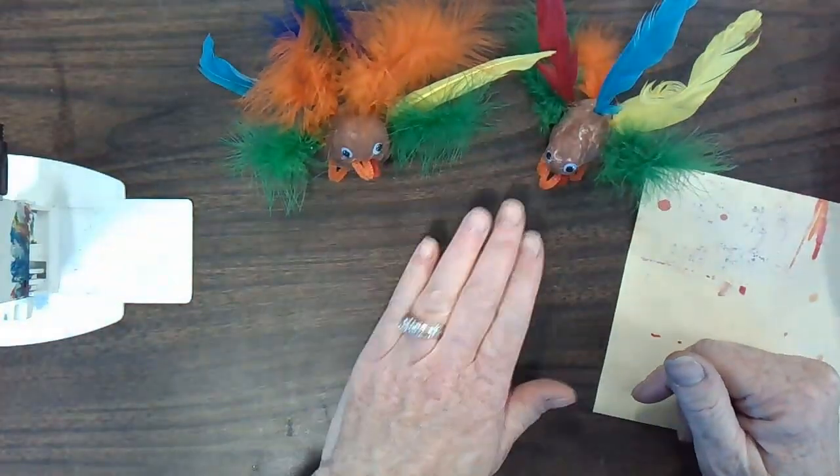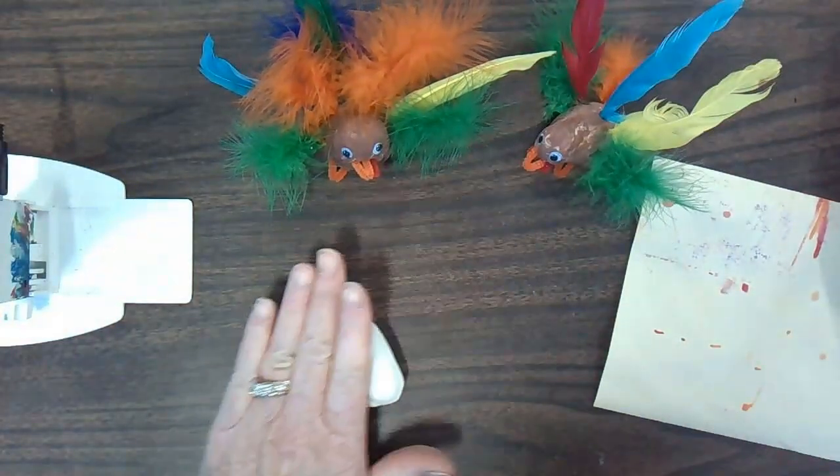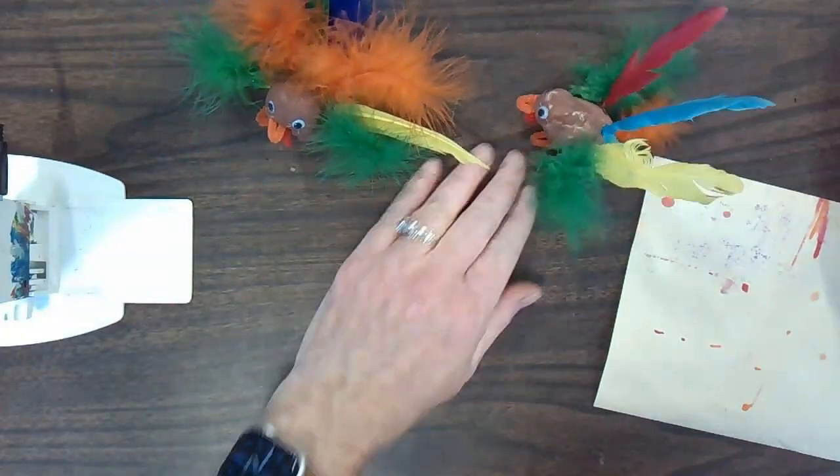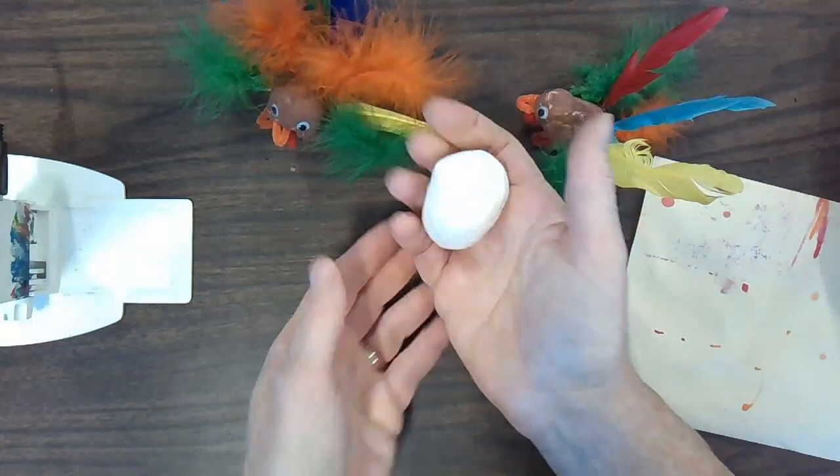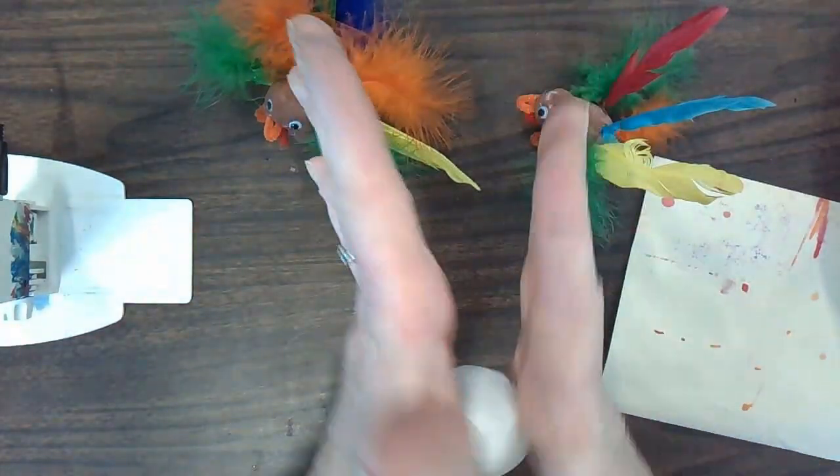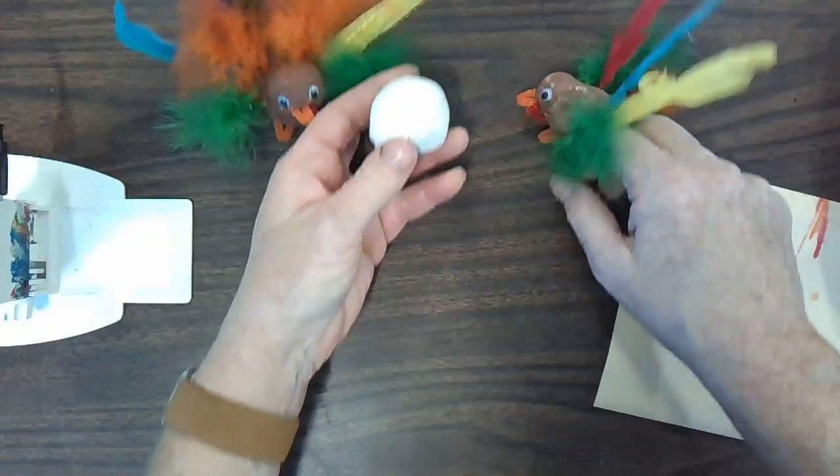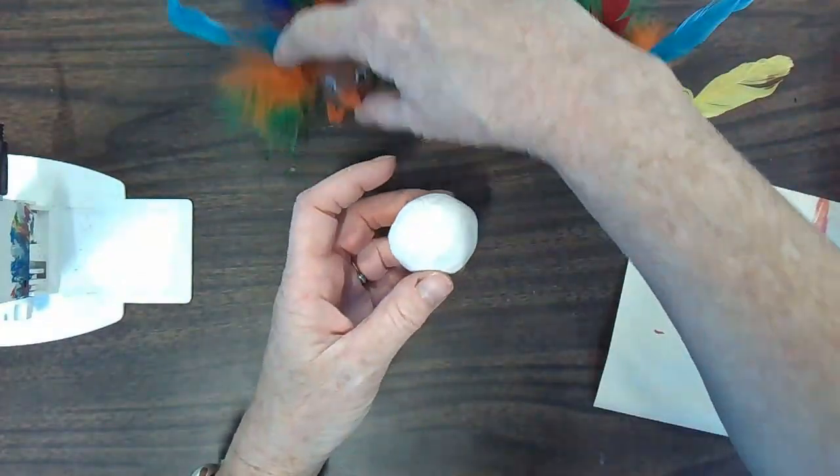Take some muscles in your hand. Some people like to put it onto the table and roll it around. Some people like to put it from hand to hand like this. But you want to just roll it around until you get it to be a nice little ball. It doesn't have to be a perfect ball.